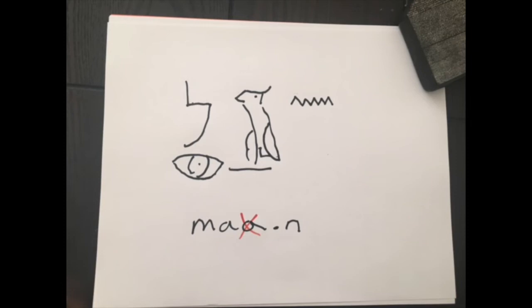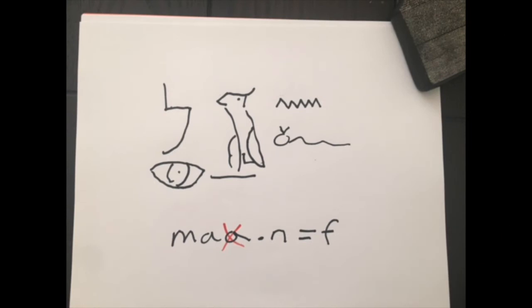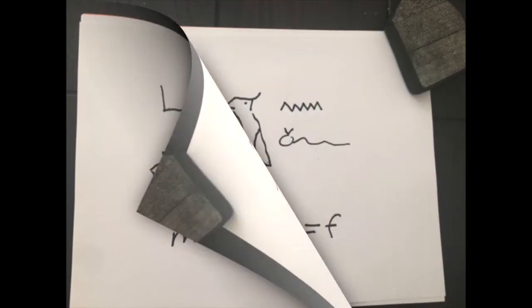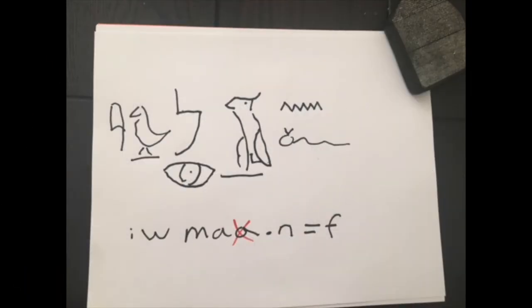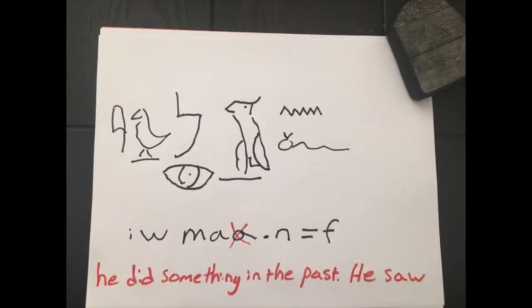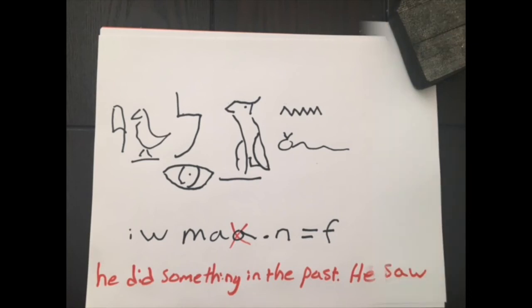So in transliteration, it'll be ma dot n, and that's just to help you as a reader read the word easier, and then equals your suffix pronoun. And again, I'm just going to use him or he, just for sanity's sake. So we've got the horned viper there. So ma dot n equals f, meaning he saw. But as I mentioned, we're also going to add that auxiliary, which is the iw before it. And that is really just your clue. Think of it as a signpost that says you're about to do a past tense sentence. So literally it would translate to he did something in the past, he saw. But we really just read this as he saw. The iw doesn't have a true English equivalent, and it's just a signpost to tell the reader that you're about to enter the past tense.